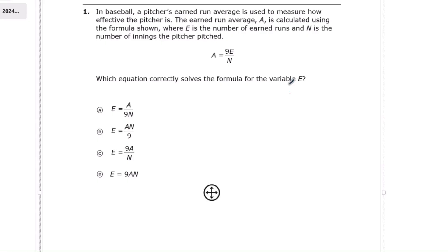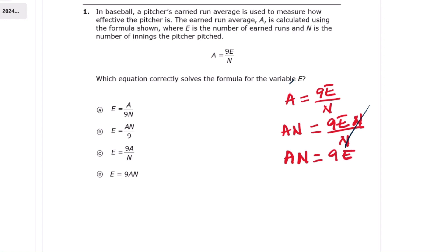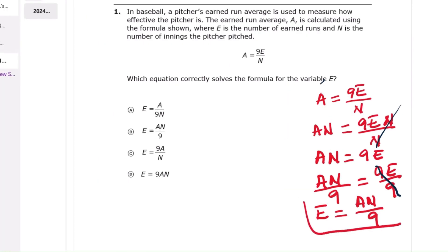Question 1. We are given the formula A equals 9E over N, and we need to solve for E. First, multiply both sides by N. That gives us AN equals 9E because the N cancels on the right. Now divide both sides by 9. AN divided by 9 equals 9E divided by 9, which simplifies to E equals AN over 9. The correct answer is choice B.